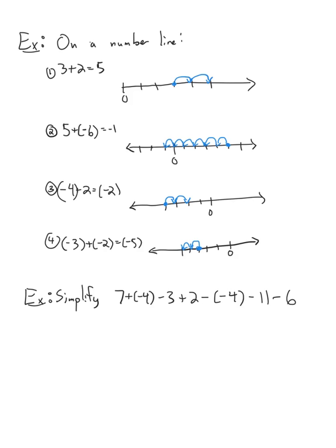Negative four plus two: we start at negative four and go two in the positive direction — one, two — and we end up at negative two. And negative three plus negative two: we start at negative three and go two in the negative direction — one, two — and we end up at negative five.